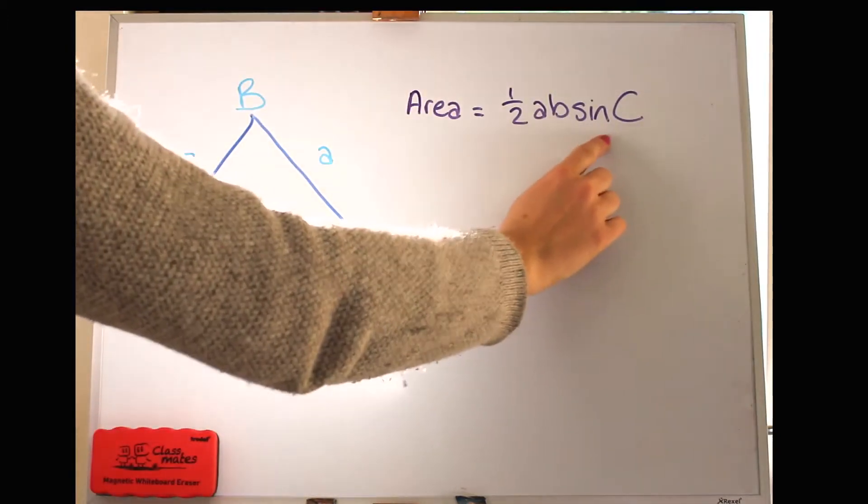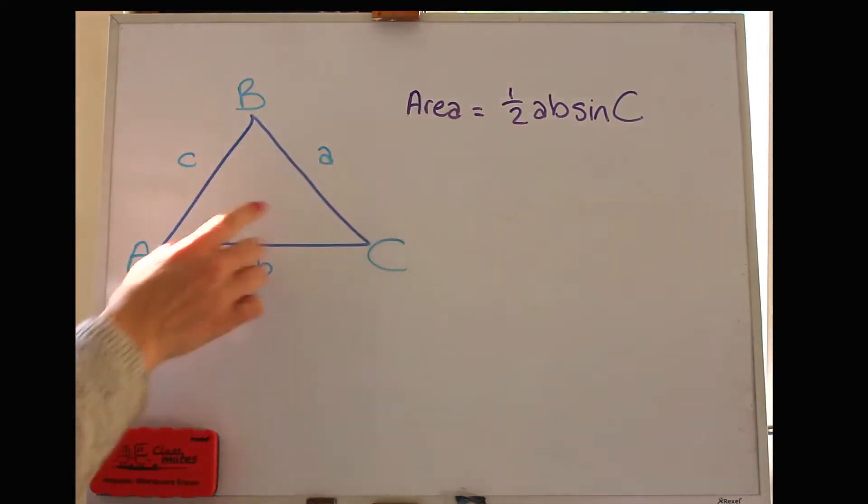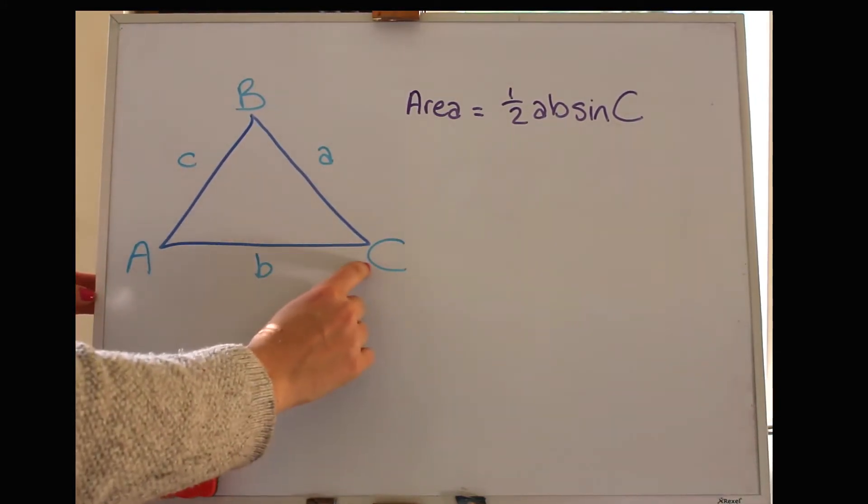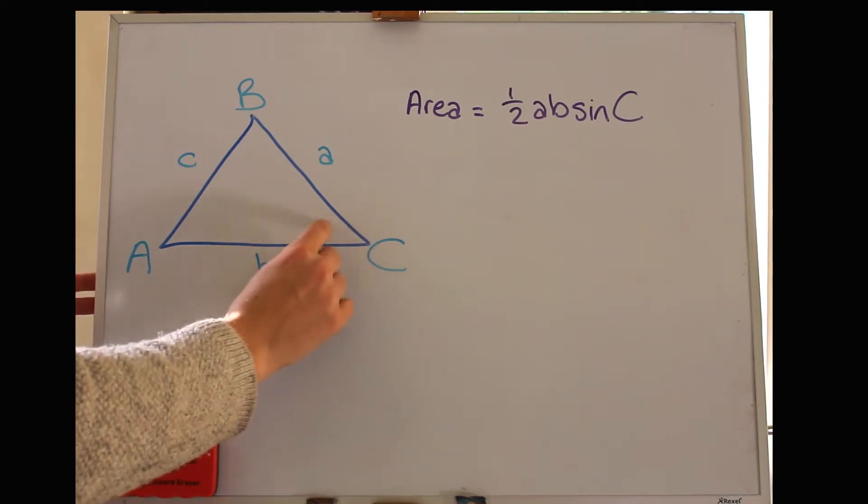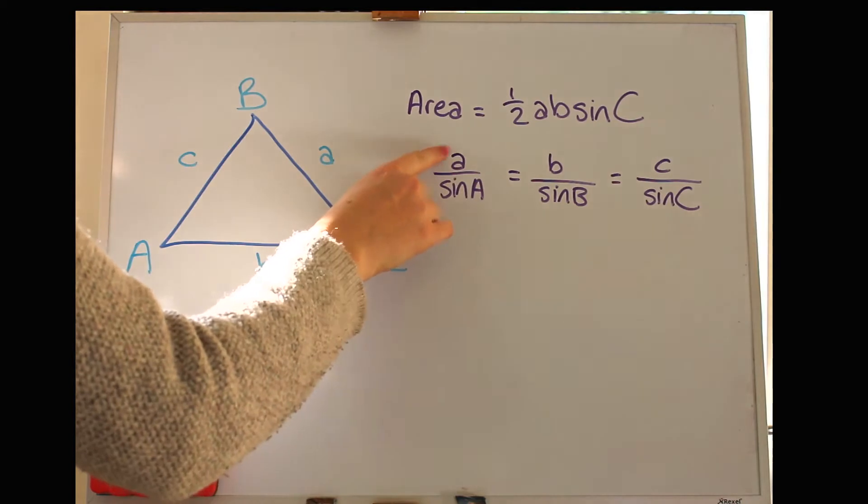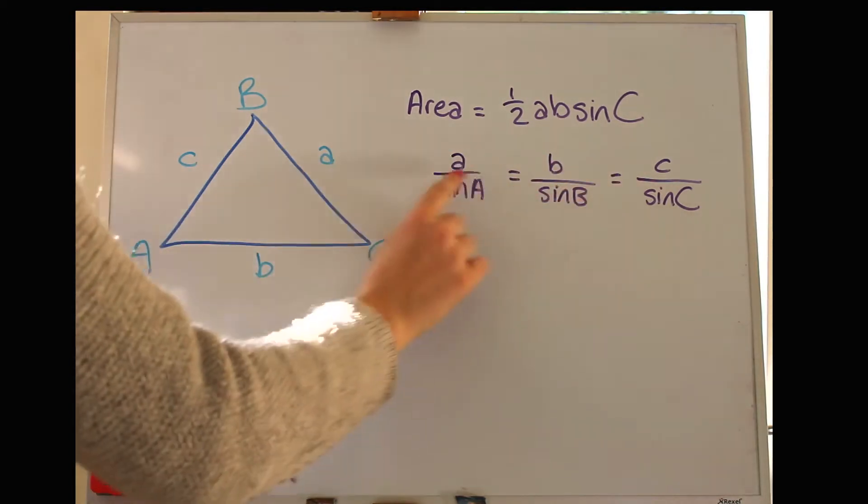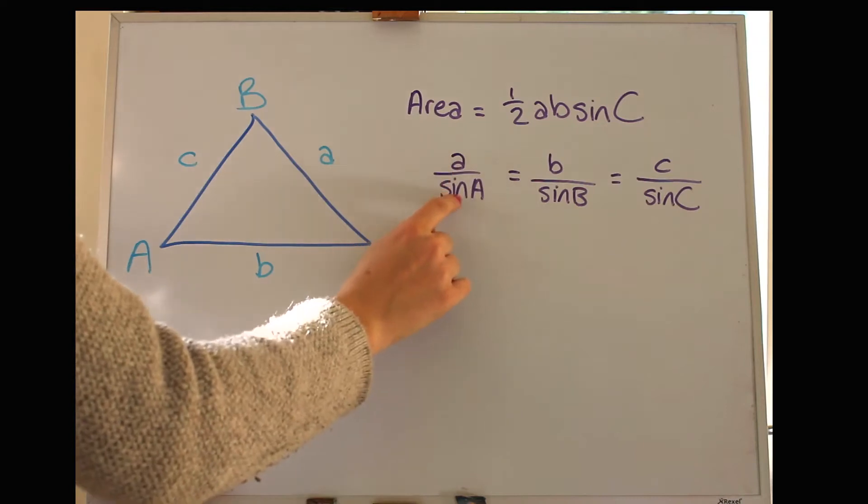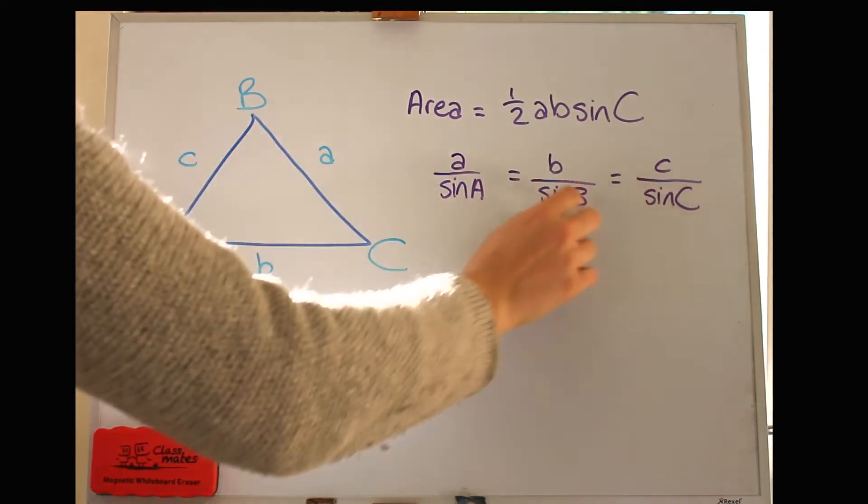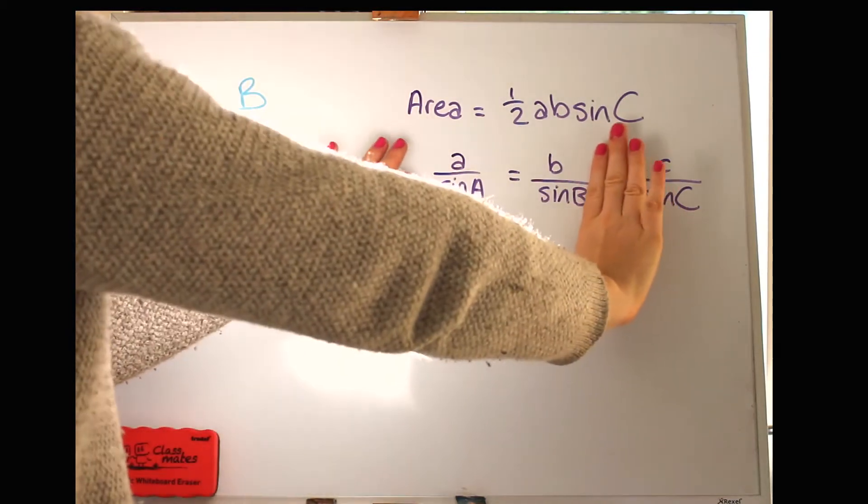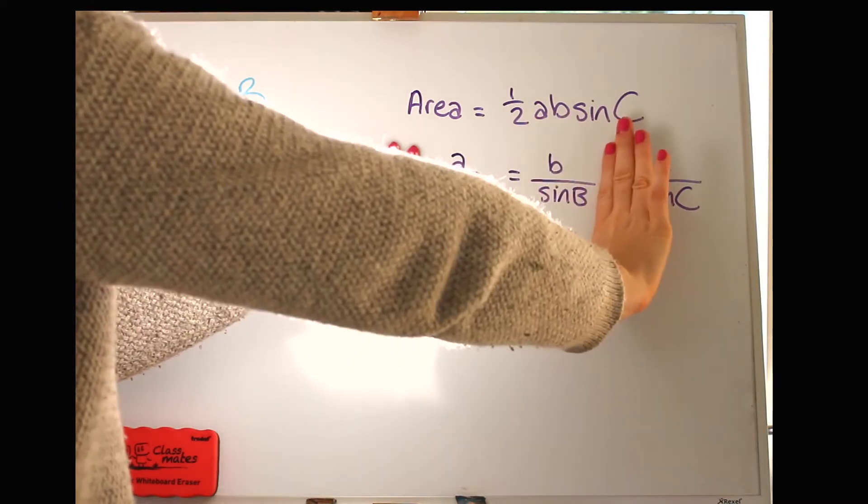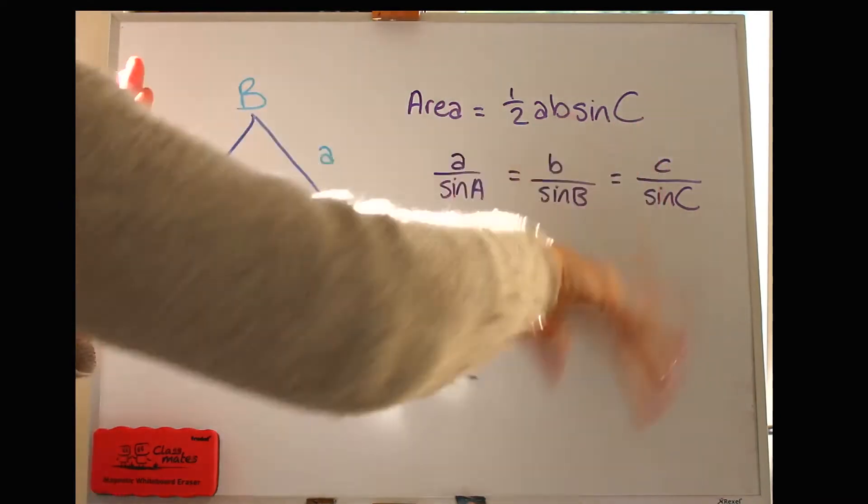So using those, I can now show you the formulas. The first formula we've got here is for the area of the triangle, a half a times b times sine C. So that's the two sides multiplied by sine of the angle. Next up, we've got the sine rule and that is telling us that the proportions are the same for each. So a side divided by sine of the opposite angle will be equal to each of those ratios. So when you use this, you normally condense it down to just being two ratios equal to each other, but we'll go through that in a minute.